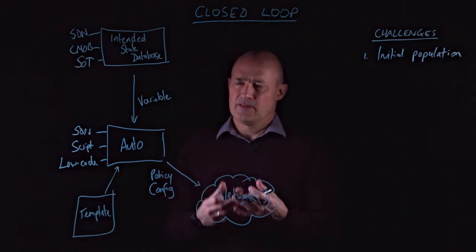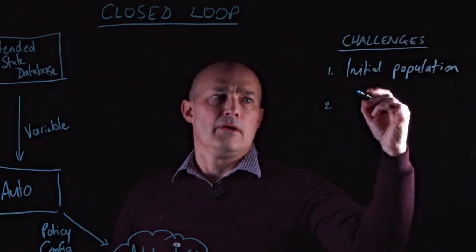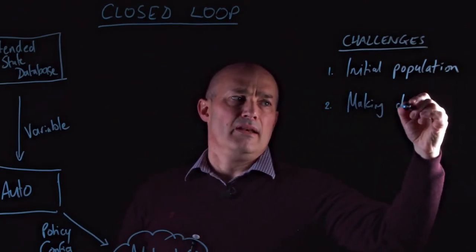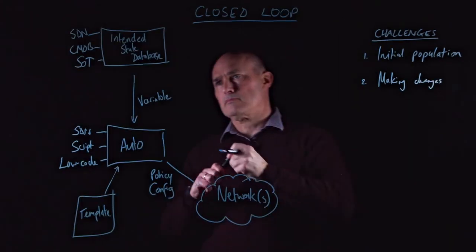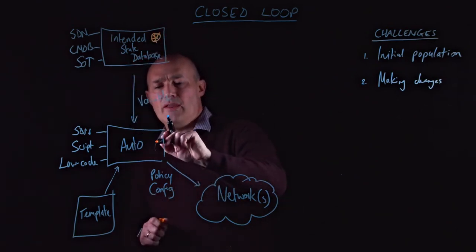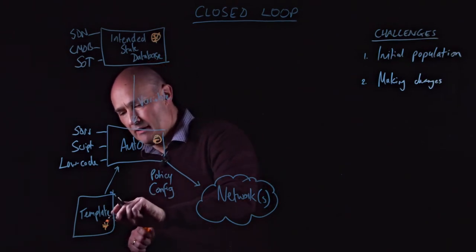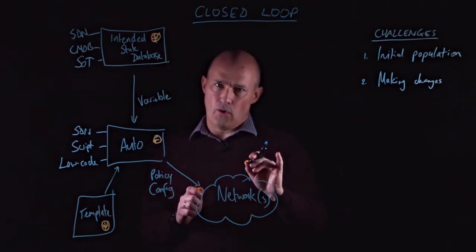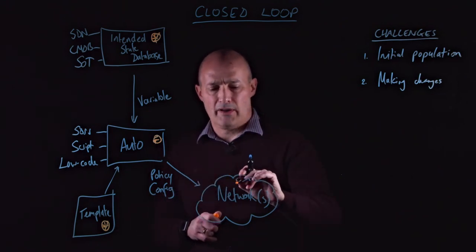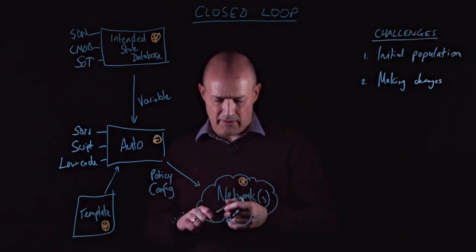Once you've done that, you then have to consider that there's actually going to be a number of places where you're going to make changes. So you might make changes in the actual intended state database here. You might make change in the automation process here. You might make changes in the template. Or if you're still doing some element of manual work, especially with troubleshooting, you may end up making manual changes in the network itself.